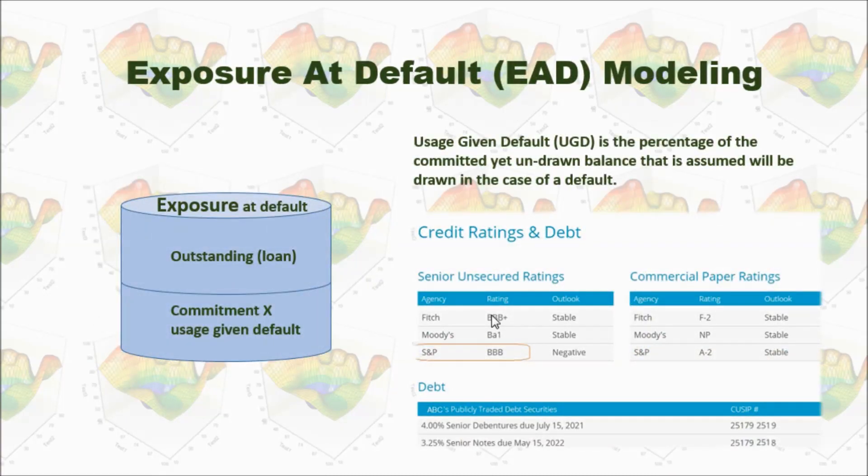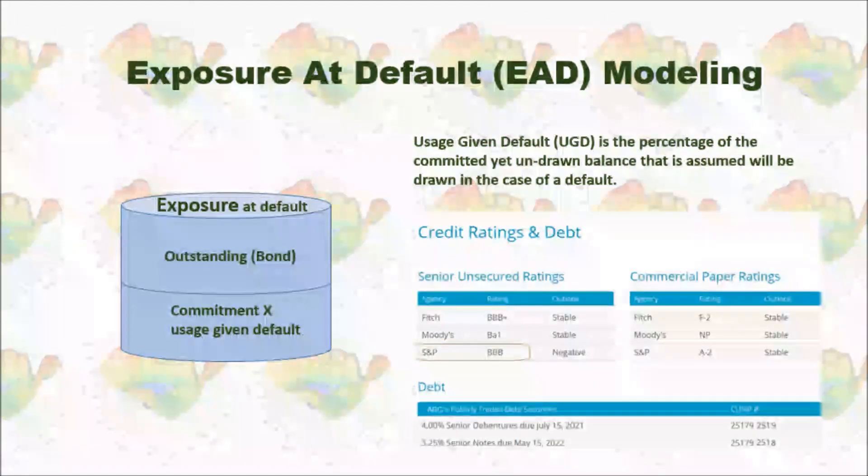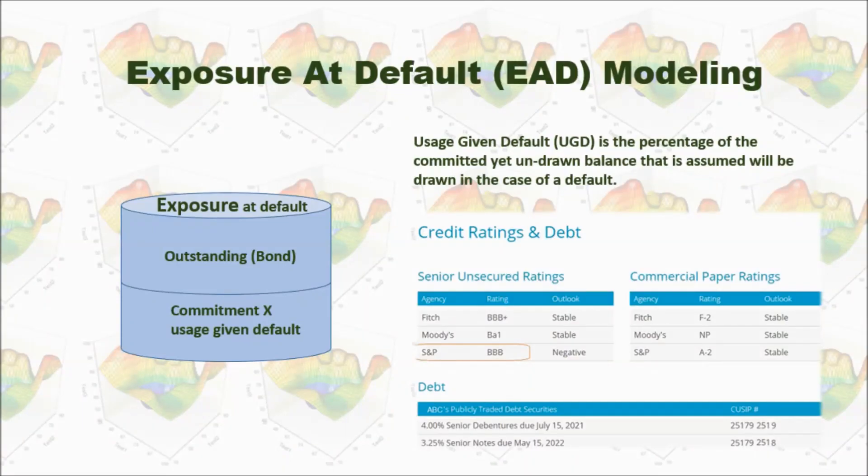First of all, let's calculate exposure at default. There are two parts for exposure at default. One part is outstanding. For example, if we bought $500 million of corporate bond of ABC company, we have outstanding $500 million.